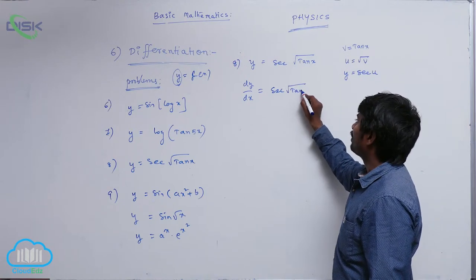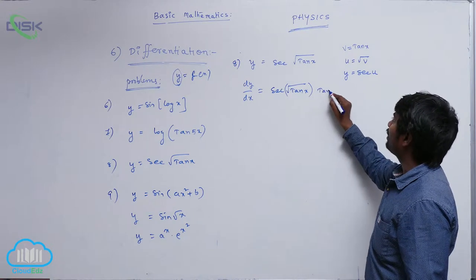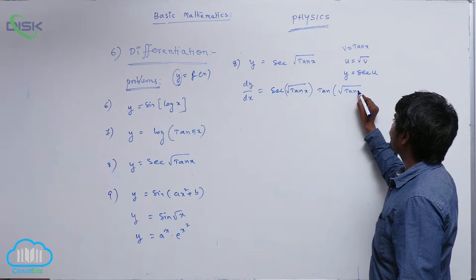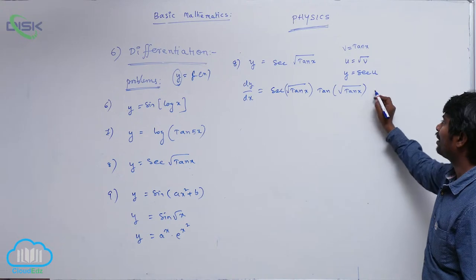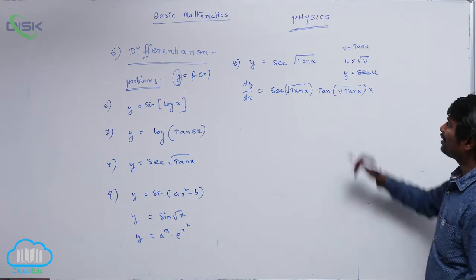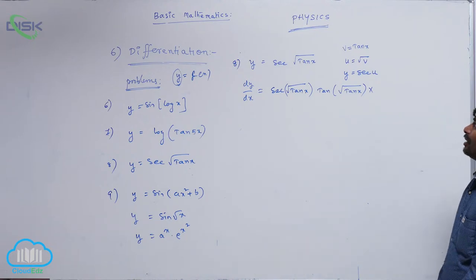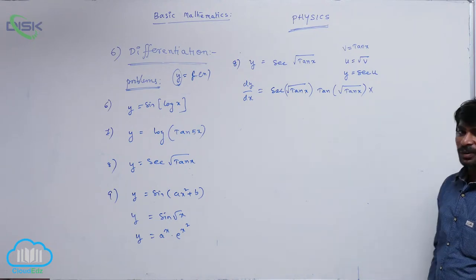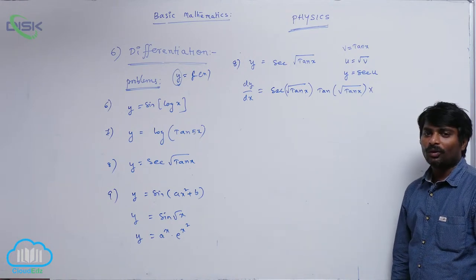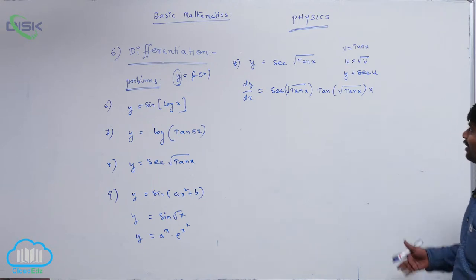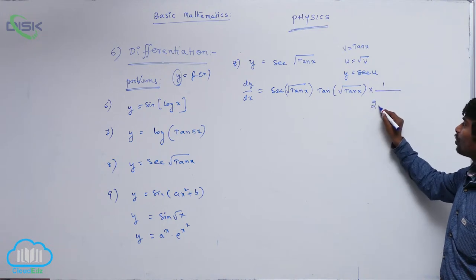Directly writing: secant of root tan x into tan of root tan x. That is the differentiation of this function up to here. Again we have to go for differentiation of u with respect to v. Differentiation of root x with respect to x is 1 by 2 root x, so differentiation of root v with respect to v is 1 by 2 root v.